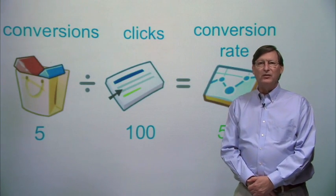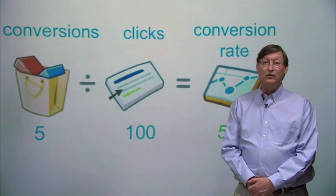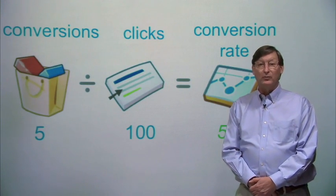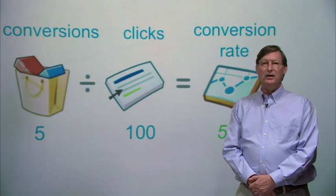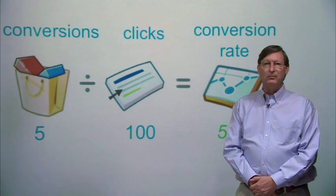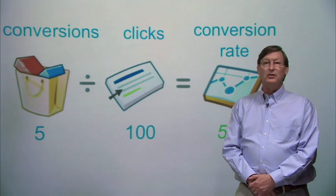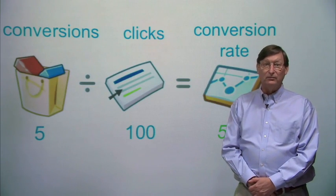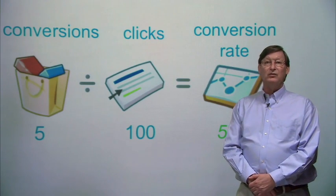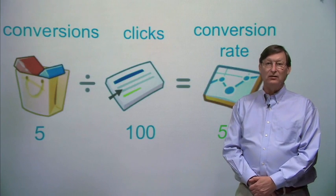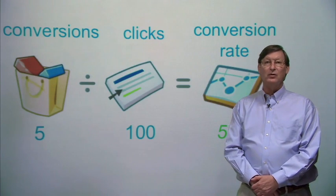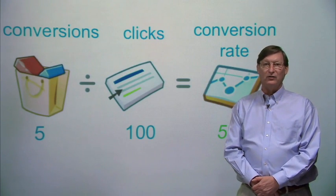You don't bid by CPA on Google — you bid by CPC, or cost per click. So you need to convert your maximum profitable CPA into a maximum CPC bid. The first step is to determine your conversion rate, which is the number of conversions completed on your site divided by the total number of ad clicks to your site.